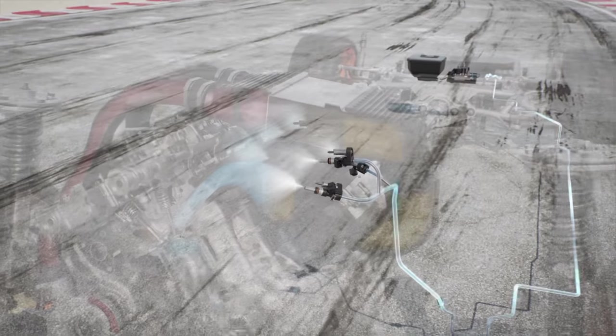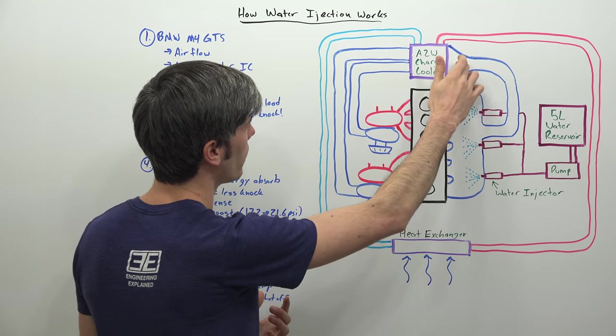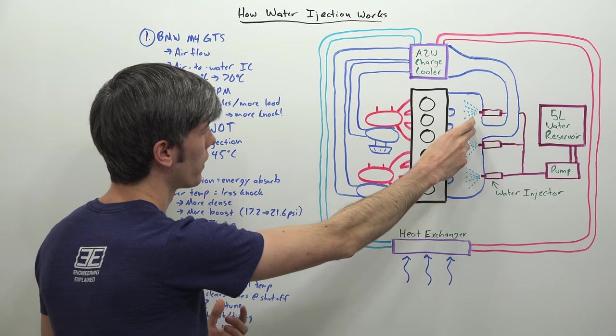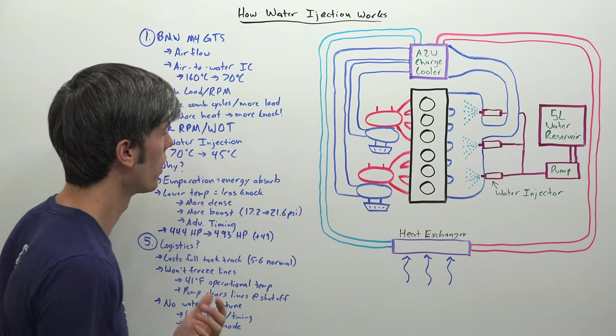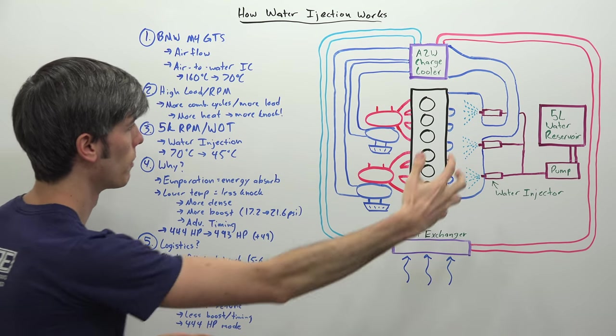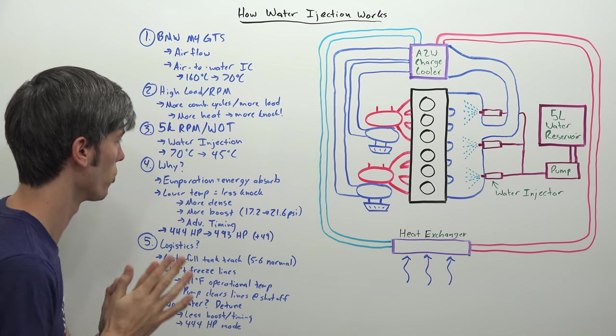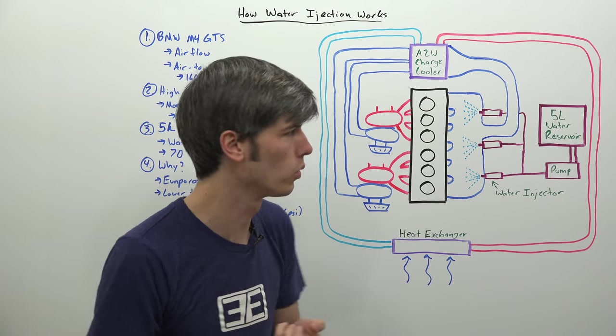So in doing so, BMW claims they're able to reduce the intake temperature another 25 degrees Celsius. So if you're at 70 coming out of the charge air cooler, then entering this intake manifold, you're going to cool that down to about 45 degrees Celsius before that air actually enters into the engine. So why does injecting water cool it?